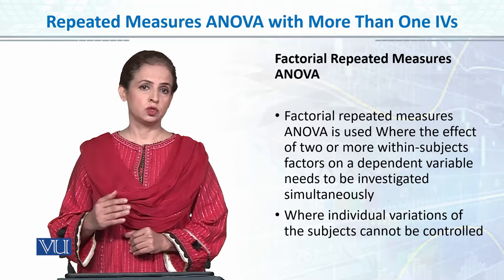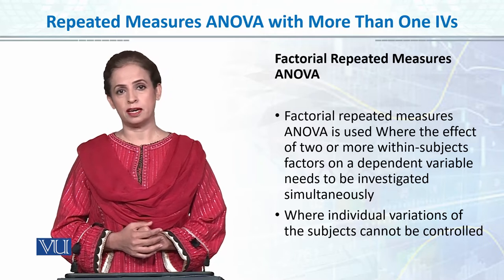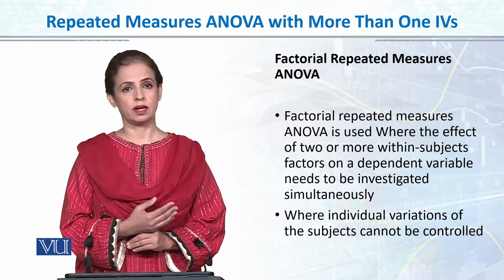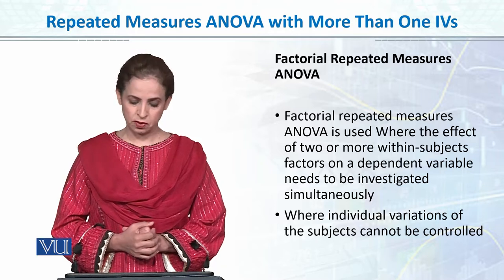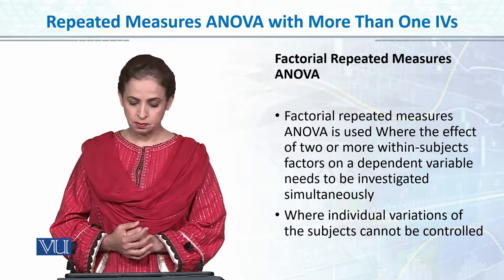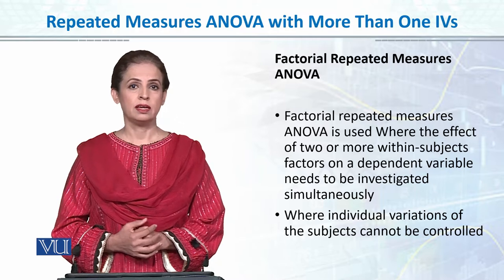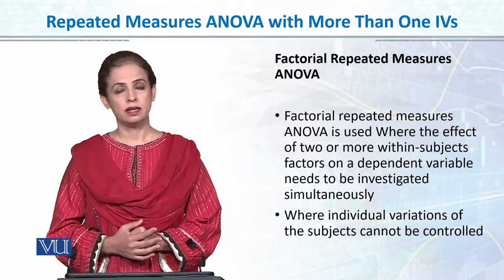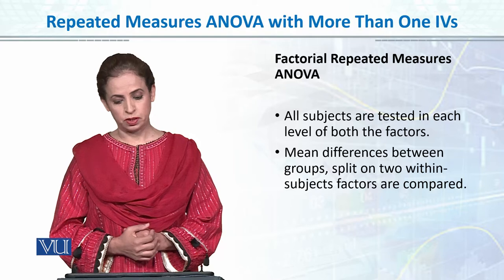Just like we have done two-way independent samples ANOVA where we can take more than one independent variable, where individual variation of the subjects cannot be controlled and we want to control it, two-way repeated measures ANOVA is our best choice.